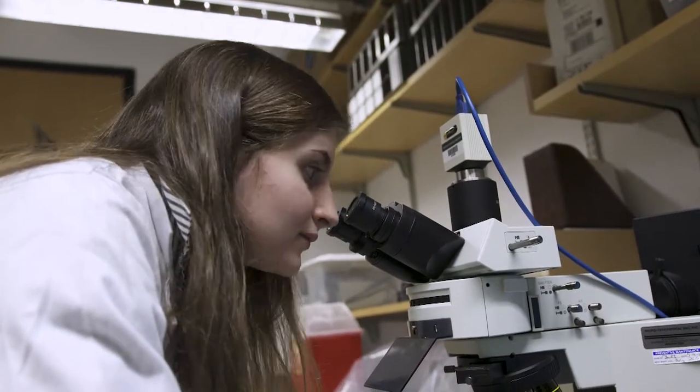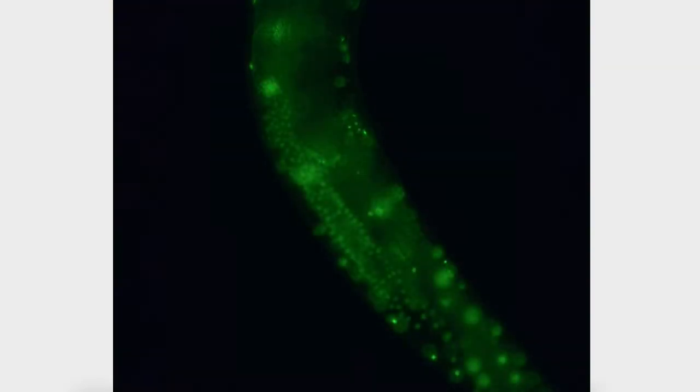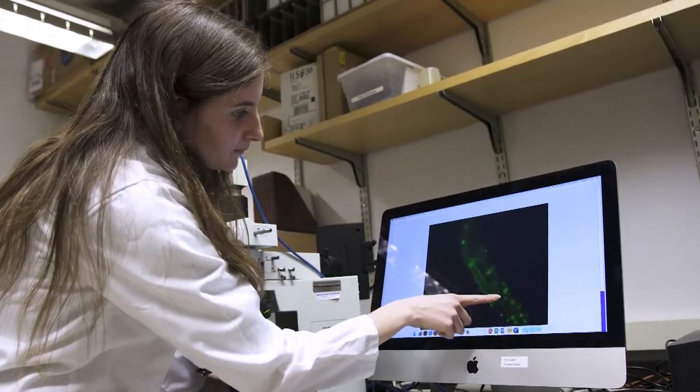The oocyte is the cell that is going to be fertilized. It then develops into an embryo. To observe the oocyte maturity, we introduced this marker that glows because we incorporated GFP, which stands for green fluorescent protein.